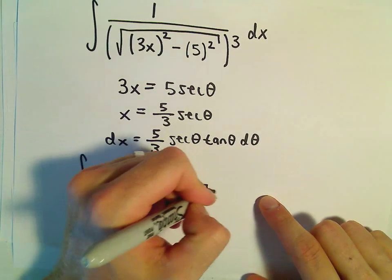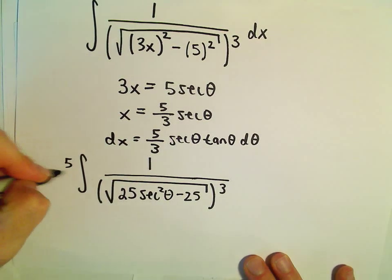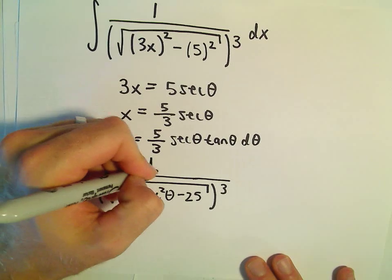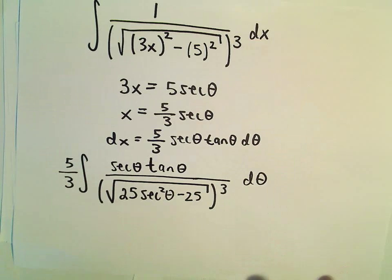Again, all of that's being cubed, so let's not forget about that. And then our dx will have 5 thirds. It looks like we'll have secant of theta times tangent of theta d theta left over.